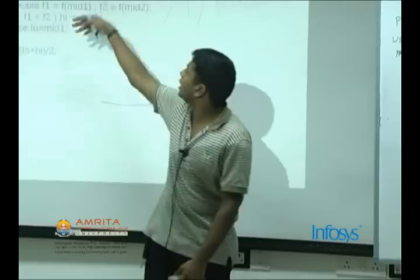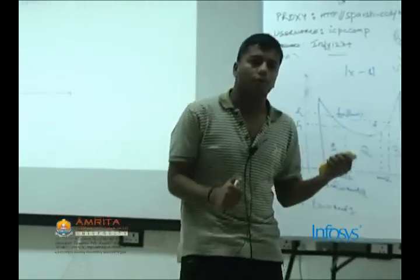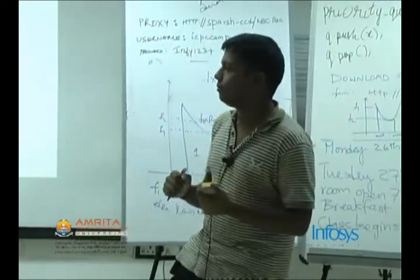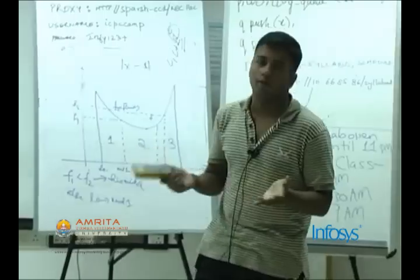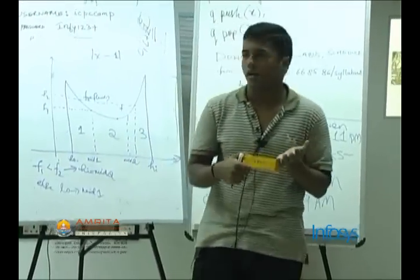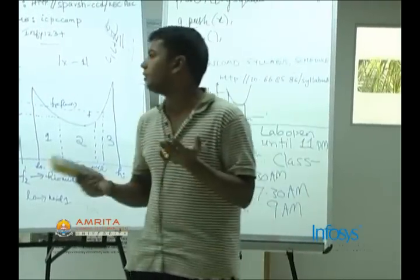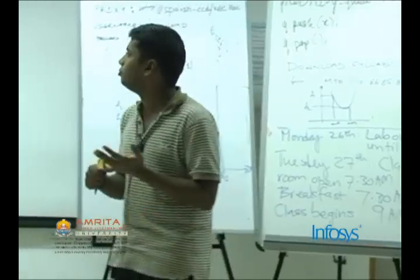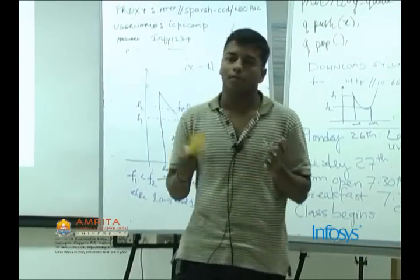You iterate until you have a required level of precision between low and high. Epsilon is typically 10 power minus 9 for programming contexts. Otherwise, you can go for 10 power minus 12, but going too low might lead to infinite loops because of double precision errors.